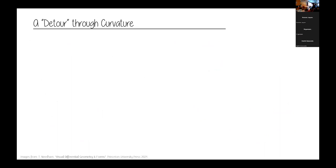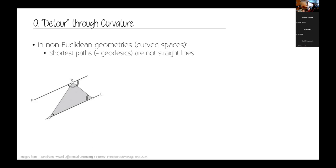There are simple axioms we observe in Euclidean space that no longer apply on curved spaces. In Euclidean space, the shortest path between two points is a straight line — obvious. Also, given a line L and a point P, you can always find a parallel line through P that never intersects L. And the sum of angles of any triangle is 180 degrees. On curved spaces, none of this holds. Shortest paths are no longer straight lines — they are curved and called geodesics. The parallel axiom no longer holds, and the sum of triangle angles is not necessarily 180 degrees.